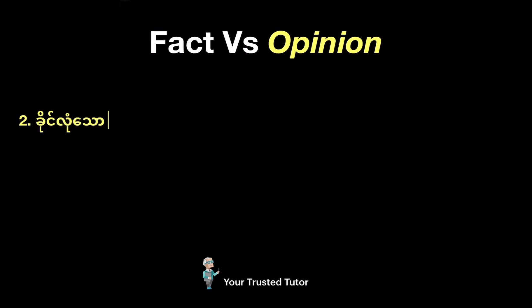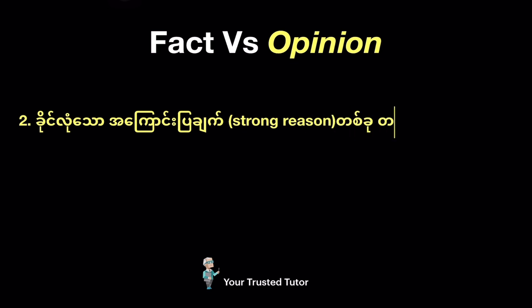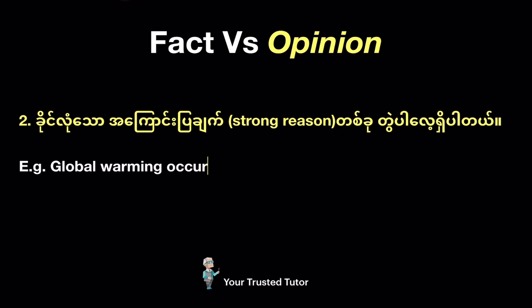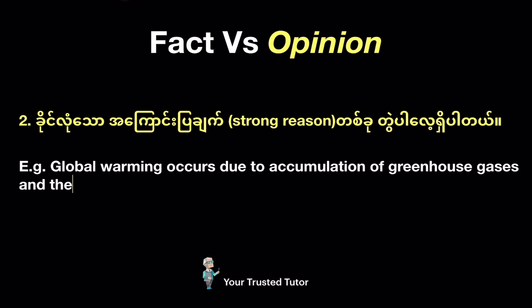Tip number two: there is usually a strong reason or logical conclusion given together with the fact. Look at the following example: 'Global warming occurs due to the accumulation of greenhouse gases and the breakdown of the ozone layer.' This is a fact mentioned together with two strong reasons.